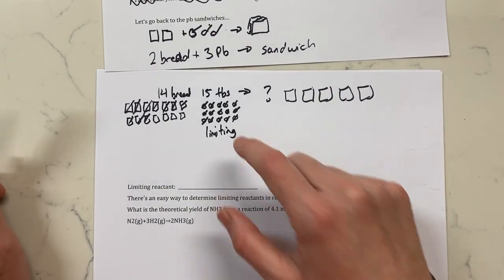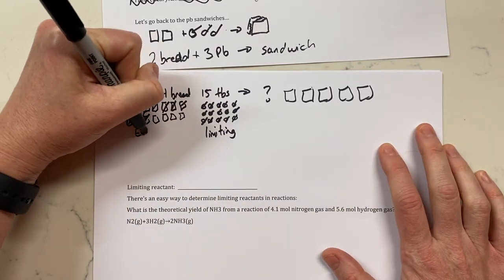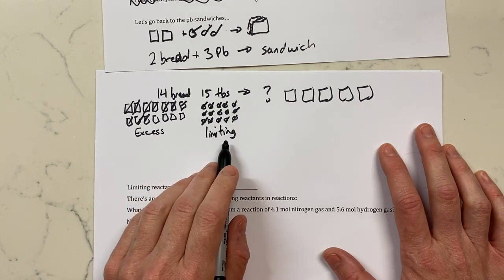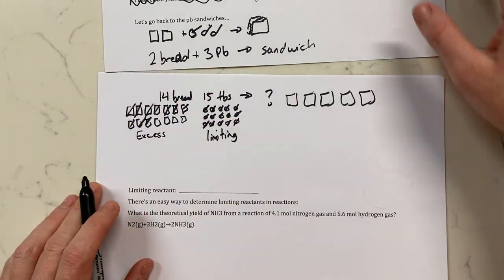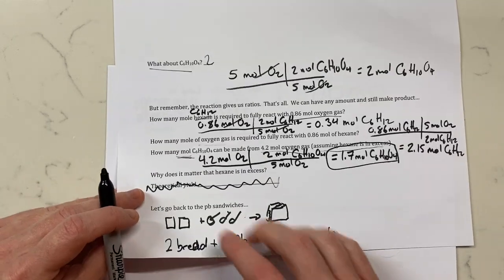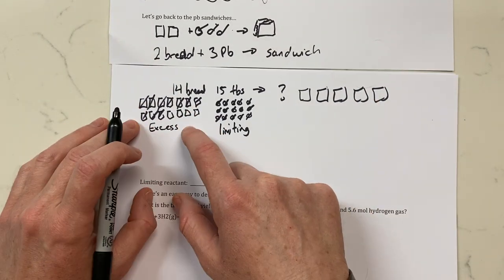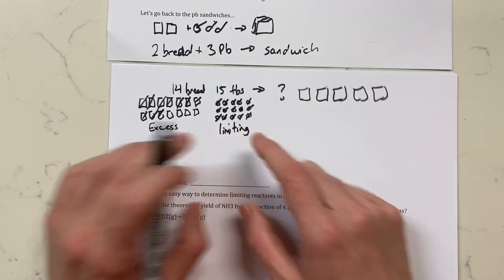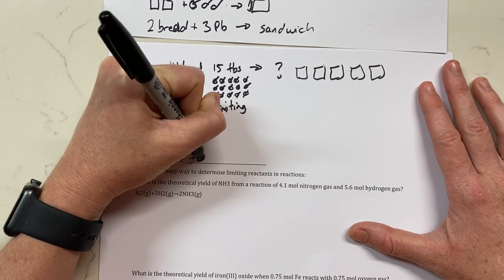We ran out of peanut butter because we just didn't have enough, but we have excess bread — this would be called the excess reactant. So we have the limiting reactant and the excess reactant. All these are reactants — anything on the left-hand side is a reactant. In our reaction, we had to know we weren't going to run out of hexane first. The only thing that determined how much product we made was the limiting reactant. The limiting reactant is the one you run out of first — the reactant that limits the reaction.